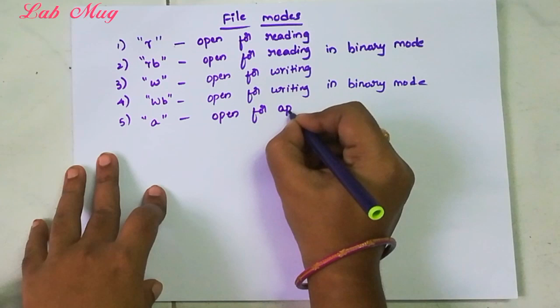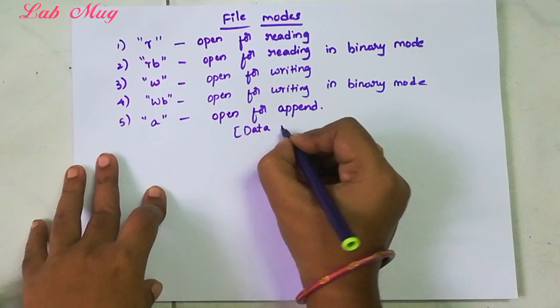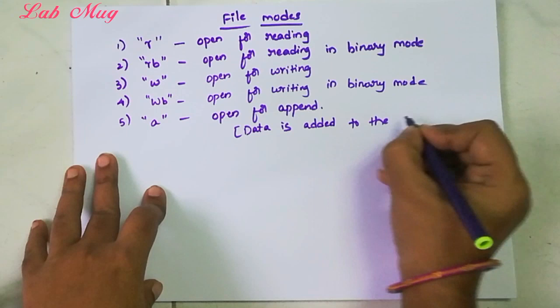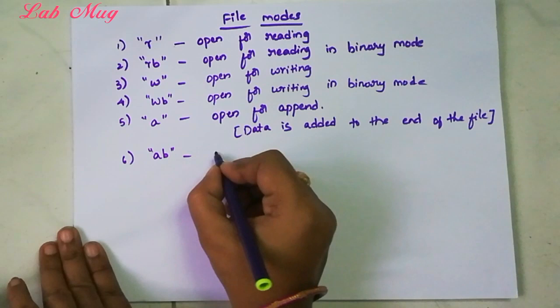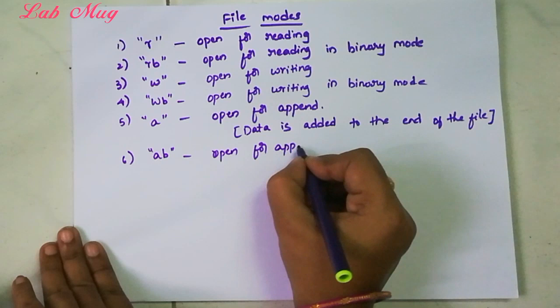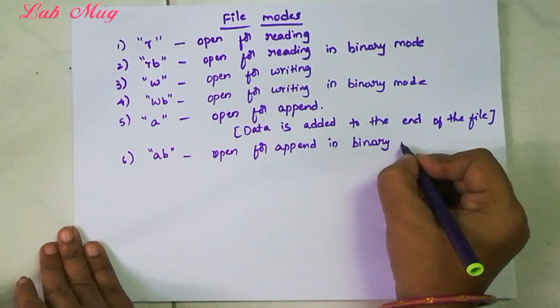That means data is added to the end of the file. So wherever the ending line is, from there our new content starts. Next is AB - open for appending in binary mode. B means binary mode.